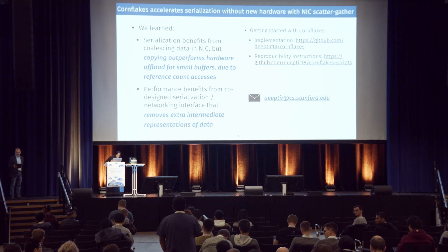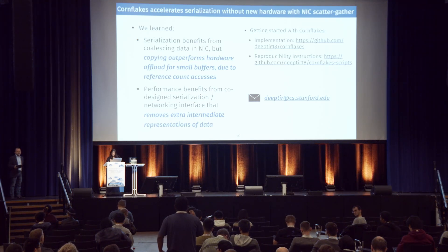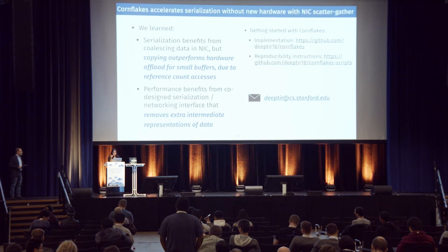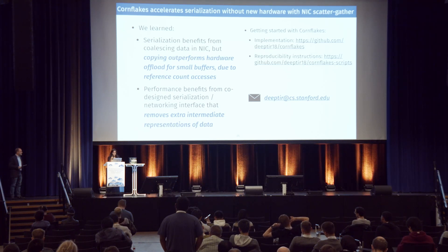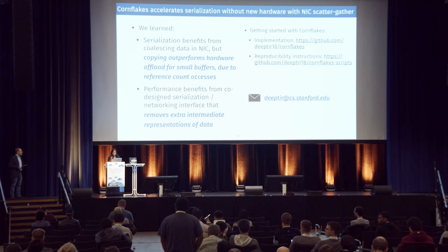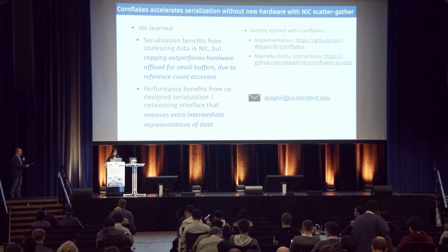A follow-up question asked whether the heuristic is per pair of CPU and network hardware, and how it works with heterogeneous systems. The speaker explained that the threshold represents the time it takes for the stack to copy a value into the existing scatter-gather entry versus the time to add an extra scatter-gather entry for that value — including memory safety cost, adding a scatter-gather entry on the ring buffer, and NIC-related factors. In their implementation, the bottleneck was mostly the CPU factors of the stack itself.